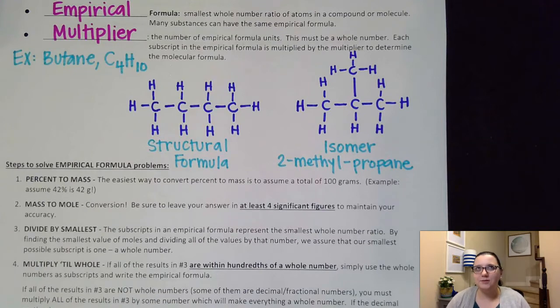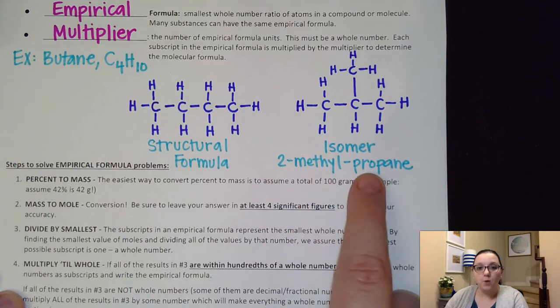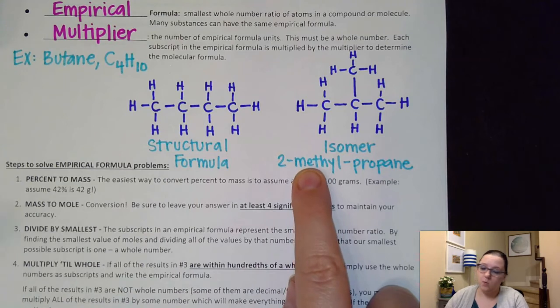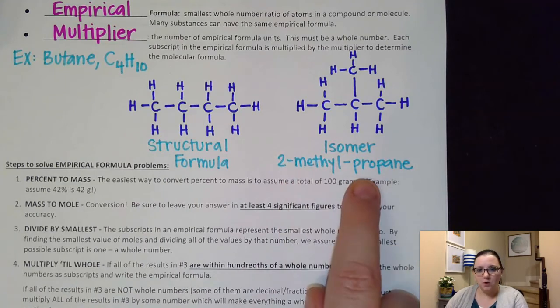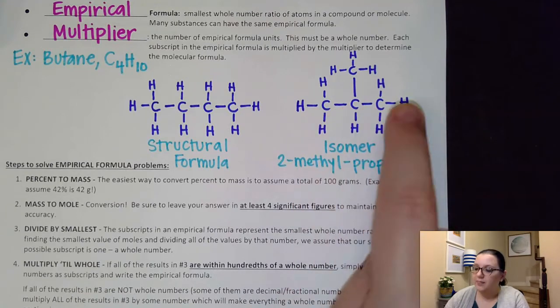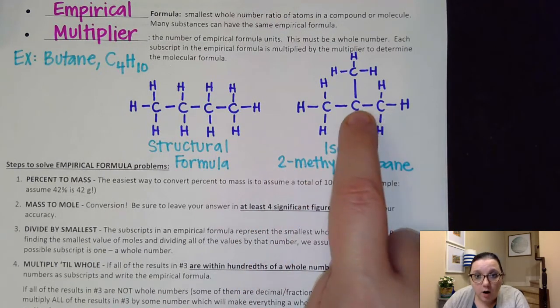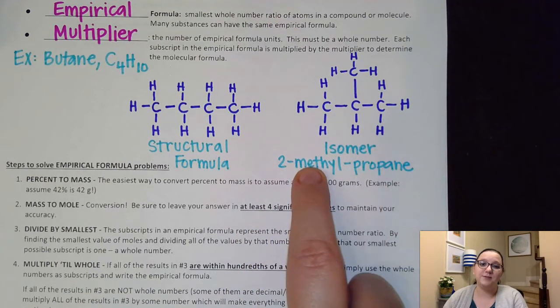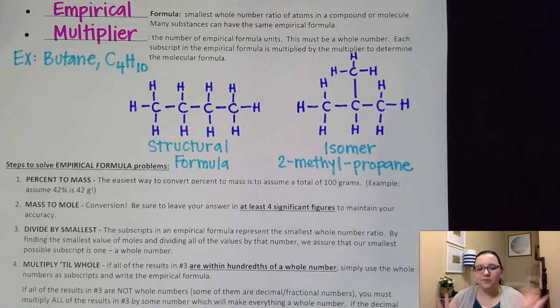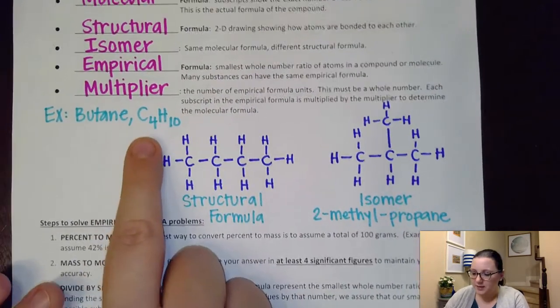By the way, a little preview to some organic naming. Hopefully you remember that bute means that we have the four carbons. You notice here we see meth and prop. Prop means three carbons. Meth only means one. So the way that this name works is that the propane is named for the longest chain of three carbons. And then off of the second carbon in the chain, there is a one carbon branch coming off of it. So that's where the methyl comes in. So just a little preview for those of you planning on taking organic chemistry in college.